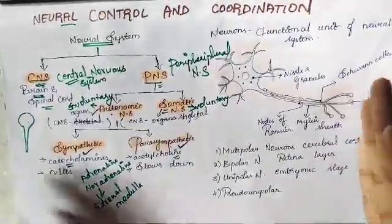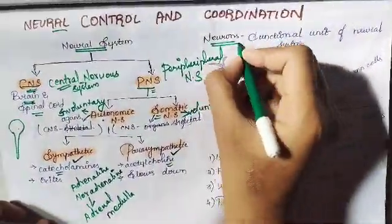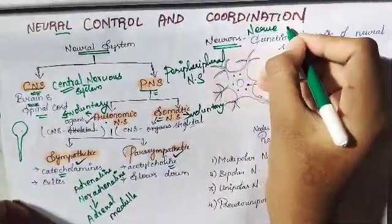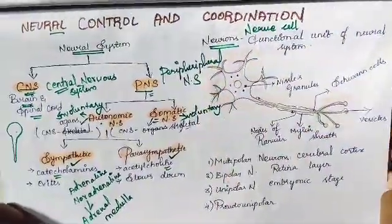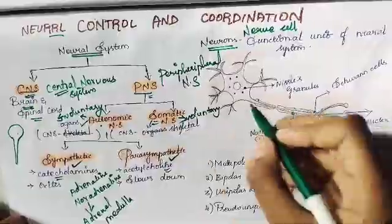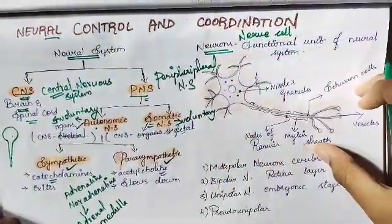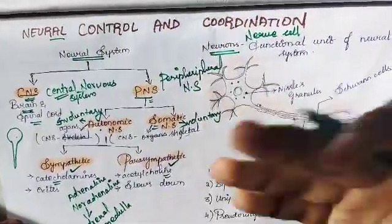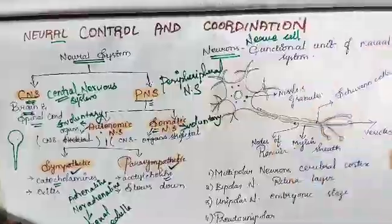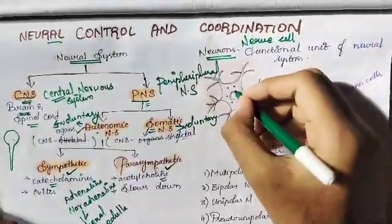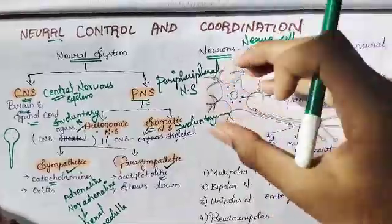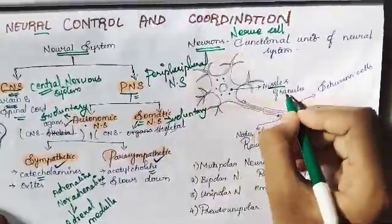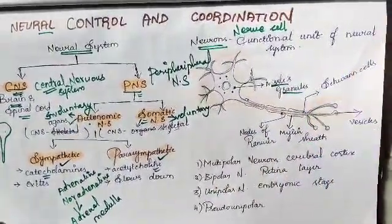The functional unit of our neural system is the neuron, also called the nerve cell. We will see the brief structure of our neuron. At the center we have the nucleus and organelles like the endoplasmic reticulum, Golgi apparatus, and other functional organelles. We also have some granules called Nissl granules.